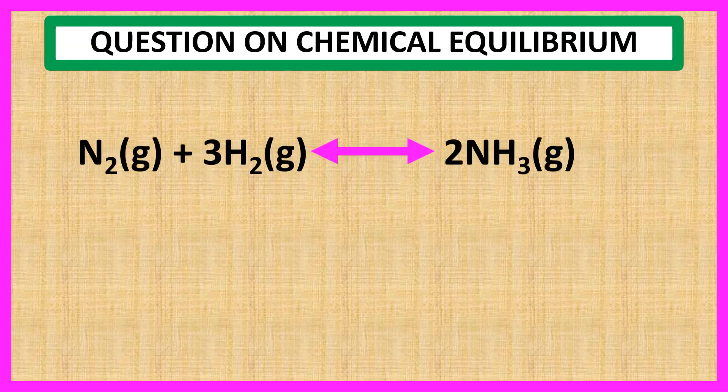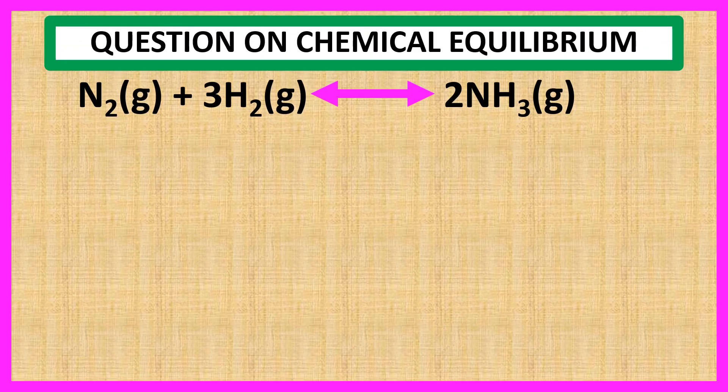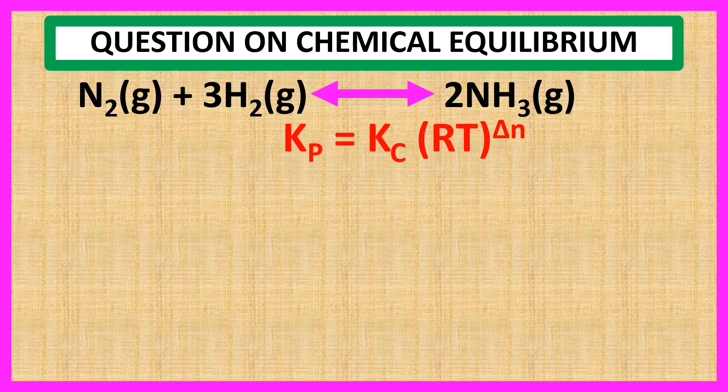The given reaction is N2 gas plus 3H2 gas to 2NH3 gas. We know Kp is equal to Kc into RT to the power delta N, where delta N is equal to difference in number of moles of gaseous products and reactants.